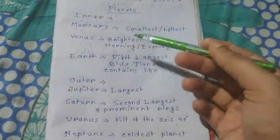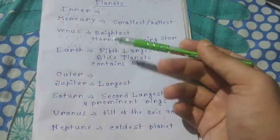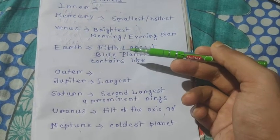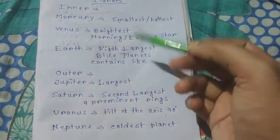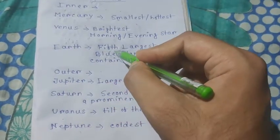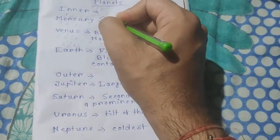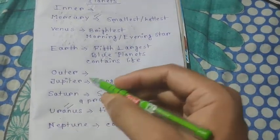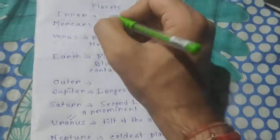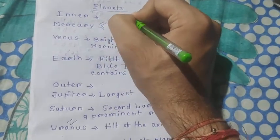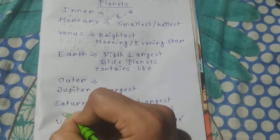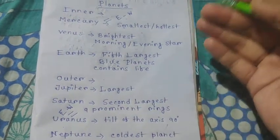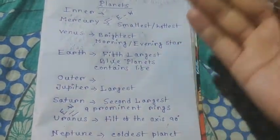Now, within inner and outer planets, all planets except two rotate from west to east. But only two planets — Mercury and Uranus — rotate from east to west. The rest of the planets rotate from west to east.